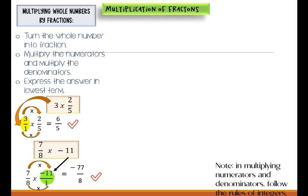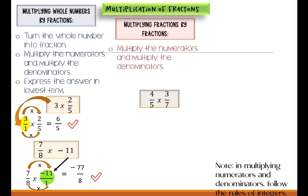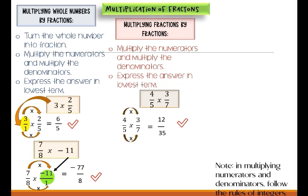Next is multiplying fractions by fractions. Example: 4 over 5 times 3 over 7. Multiply the numerators and multiply the denominators: 4 times 3 is equal to 12, and 5 times 7 is equal to 35. Express the answer in lowest terms — 12 over 35 is already the reduced form.